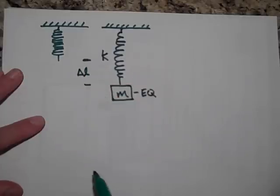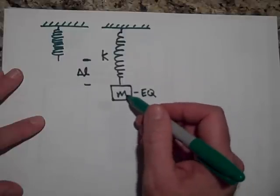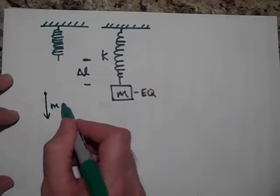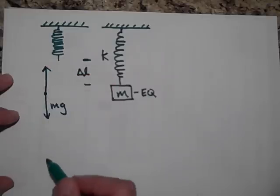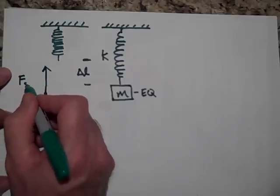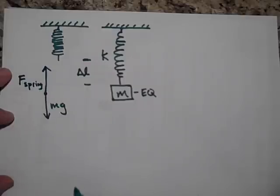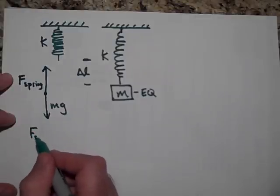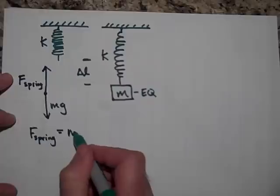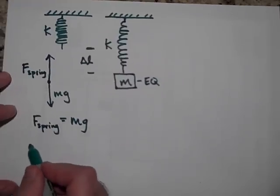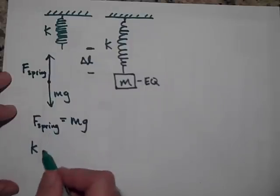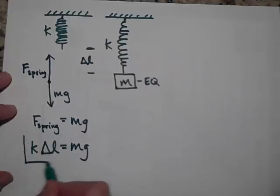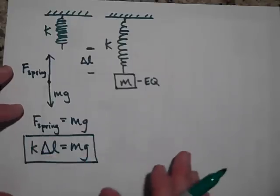Now if that's just sitting there, I'm going to draw the free body diagram. mg down is equal to the force of the spring up. The force of the spring, in magnitude, will equal mg. So the force of the spring is k times delta l. That's Hooke's law. So mg is equal to k times delta l. Remember that.